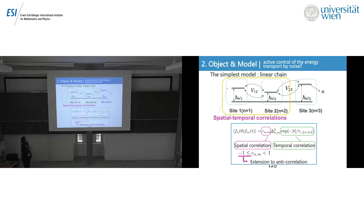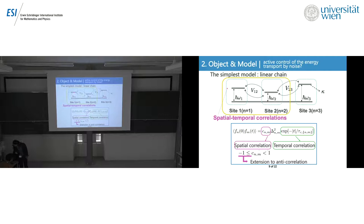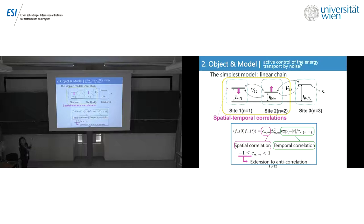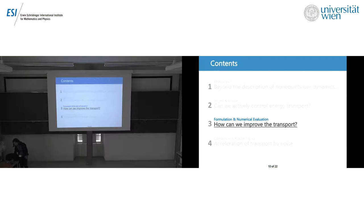If the noise applied to two sites has anti-correlation — if noise decreases the excitation energy of the first site, the anti-correlated noise increases the excitation energy of the second site. So if the applied noise has the opposite sign, this is called anti-spatially correlated noise. If the energy difference is reduced this way, anti-correlation can decrease the energy difference and accelerate energy transport.